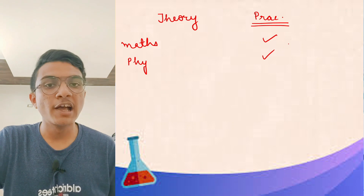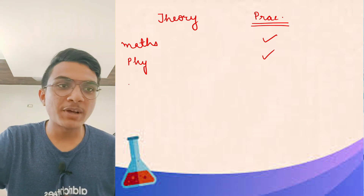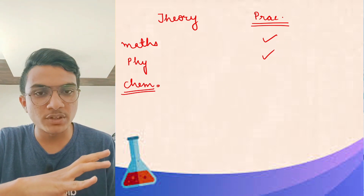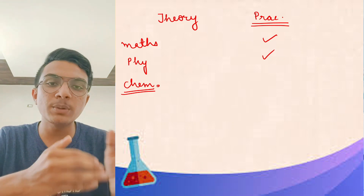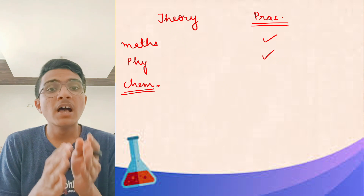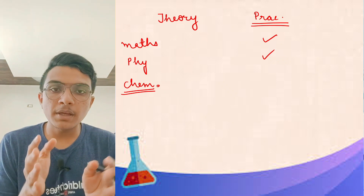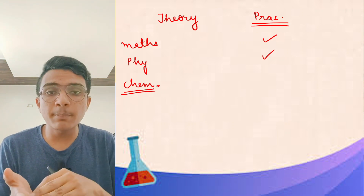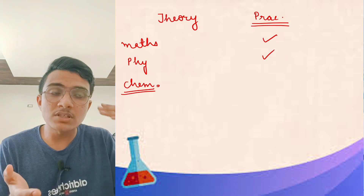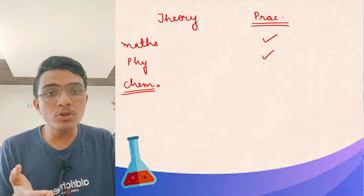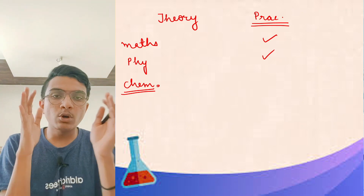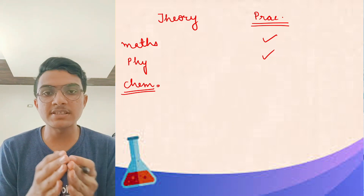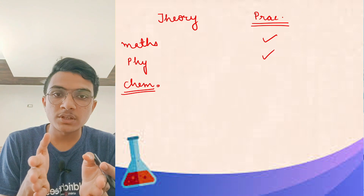Now coming to chemistry. In physical chemistry there are more numerical sections, while organic and inorganic are more theory-based. In inorganic and organic, there are many portions of theory and you have to learn many things. However, in organic chemistry, after a certain point it becomes conceptual — the more you practice, the clearer your understanding becomes. For example, in esterification reactions, practicing different acids and their products makes the concept crystal clear.